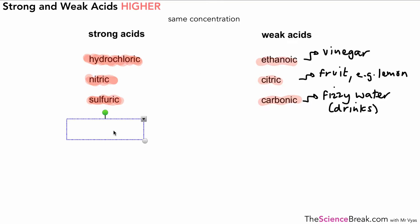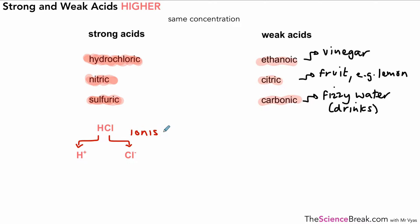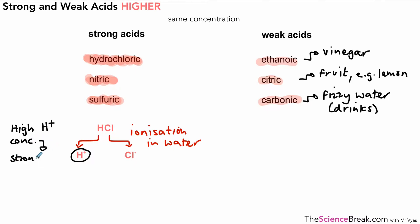Let's look at one particular example: hydrochloric acid, HCl. Hydrochloric acid is basically hydrogen chloride dissolved in water, and when it dissolves in water it will break down into two separate ions — hydrogen ions and chloride ions. We call this ionization. It's the hydrogen ions that make the acid the acid. Acids are basically concentrations of hydrogen ions. A high concentration of hydrogen ions gives us a strong acid.